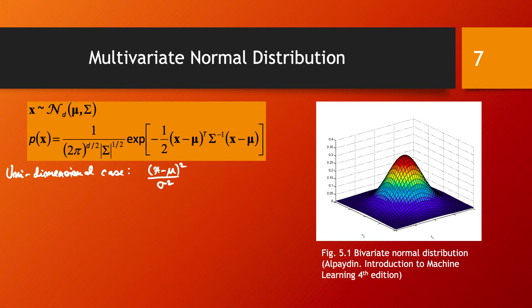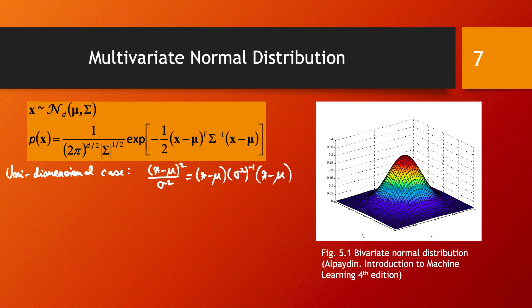I'm just rewriting this to make the point that it is very similar to what we have in the multivariate case. We can rewrite this as (x − μ) times σ² to the power minus 1 times (x − μ). This is just a rewriting of the numerical fraction, but the reason is to show that in the multivariate case we have something very similar.